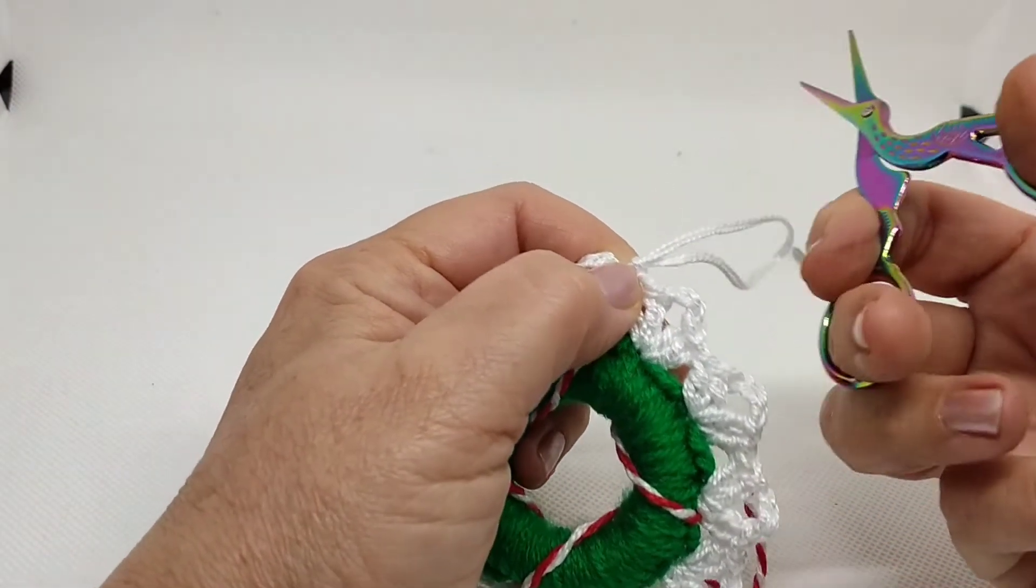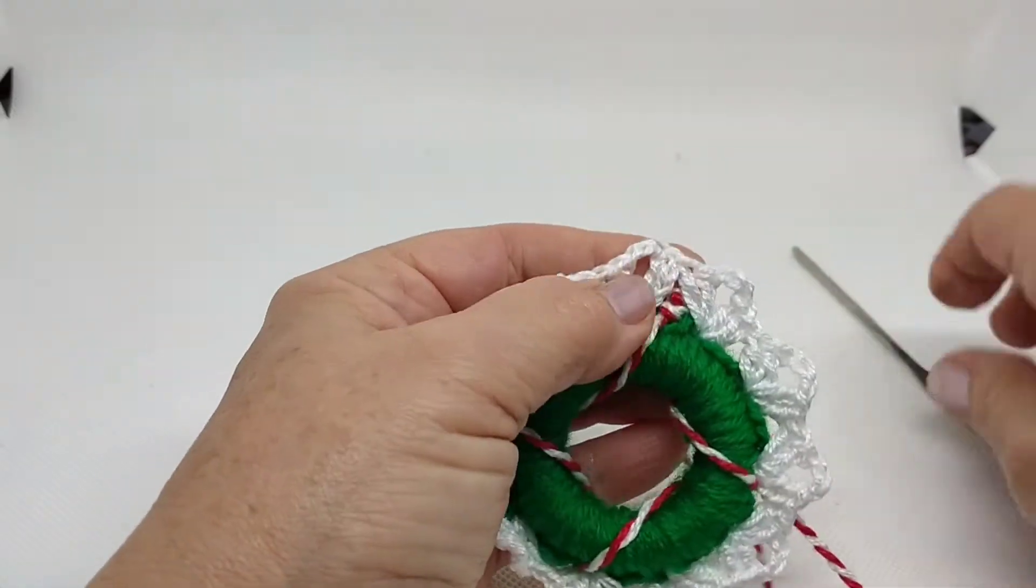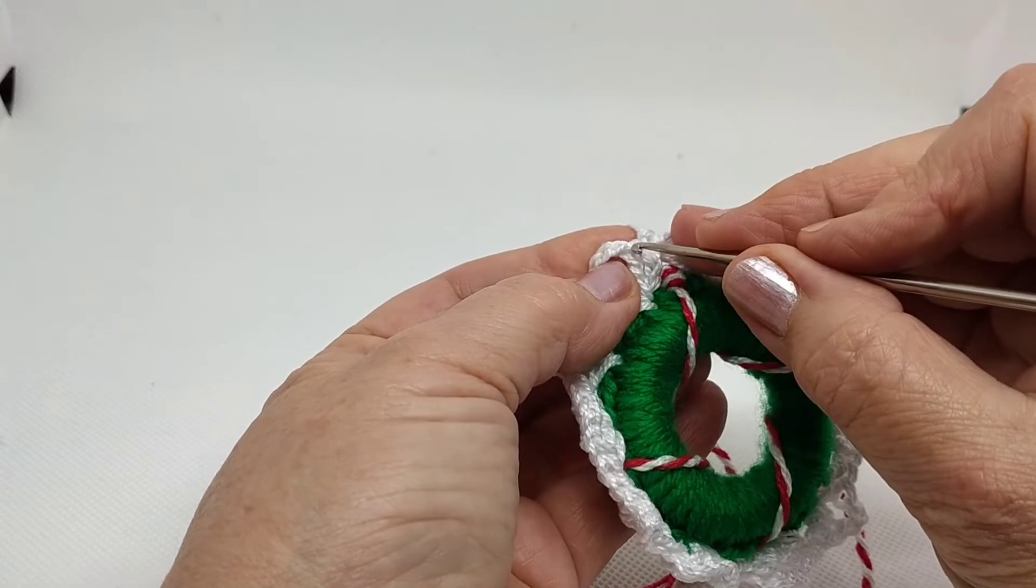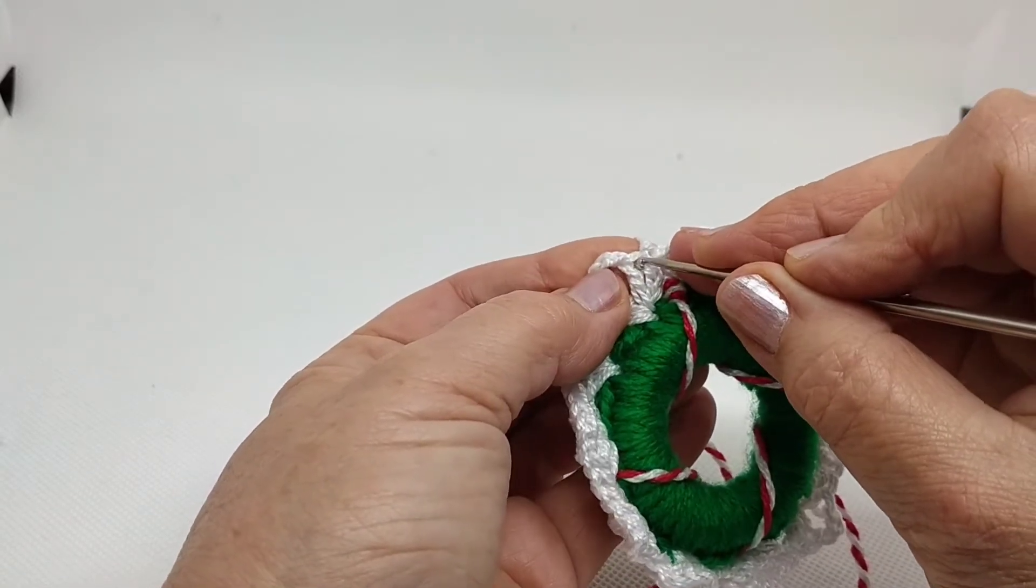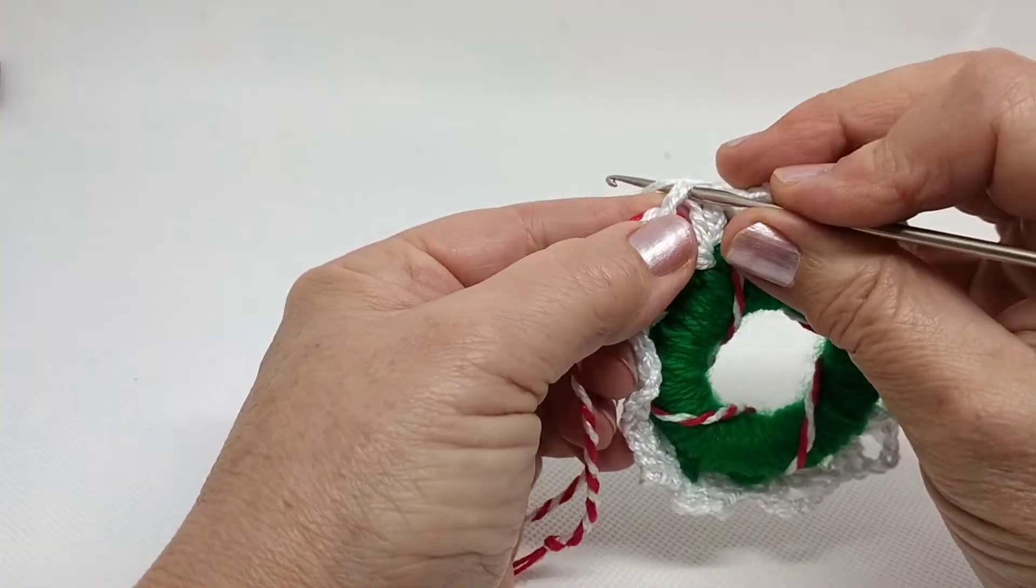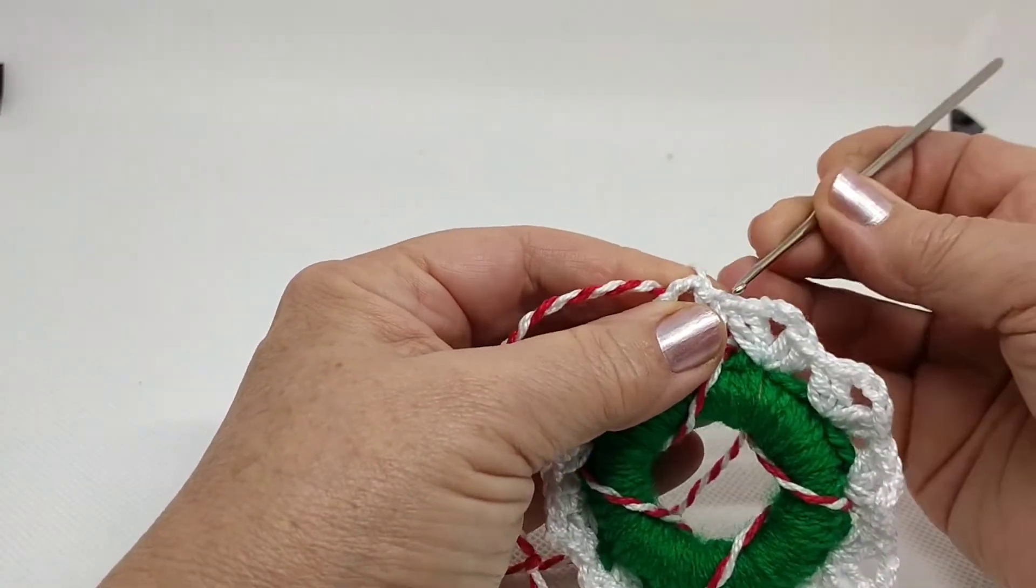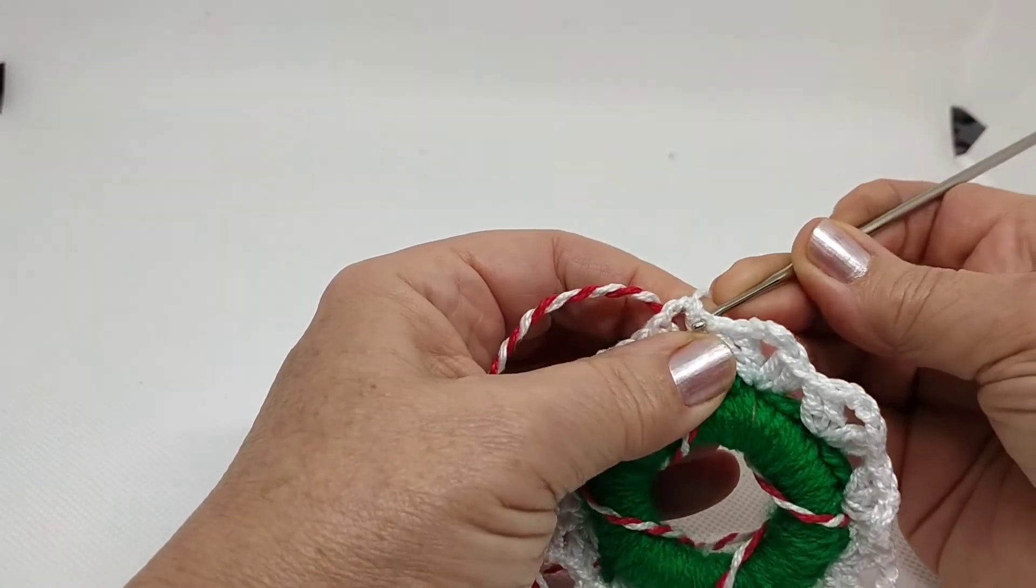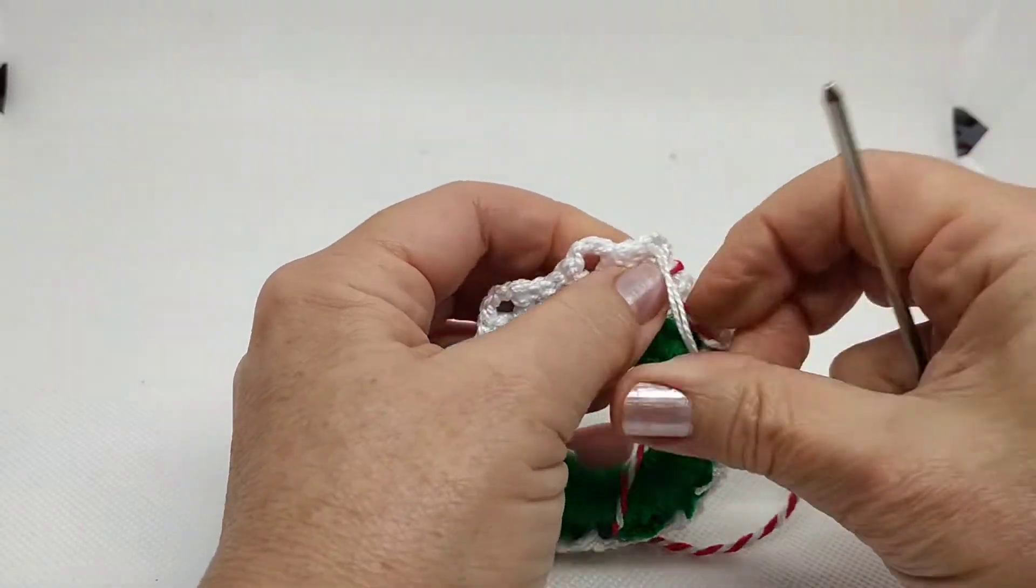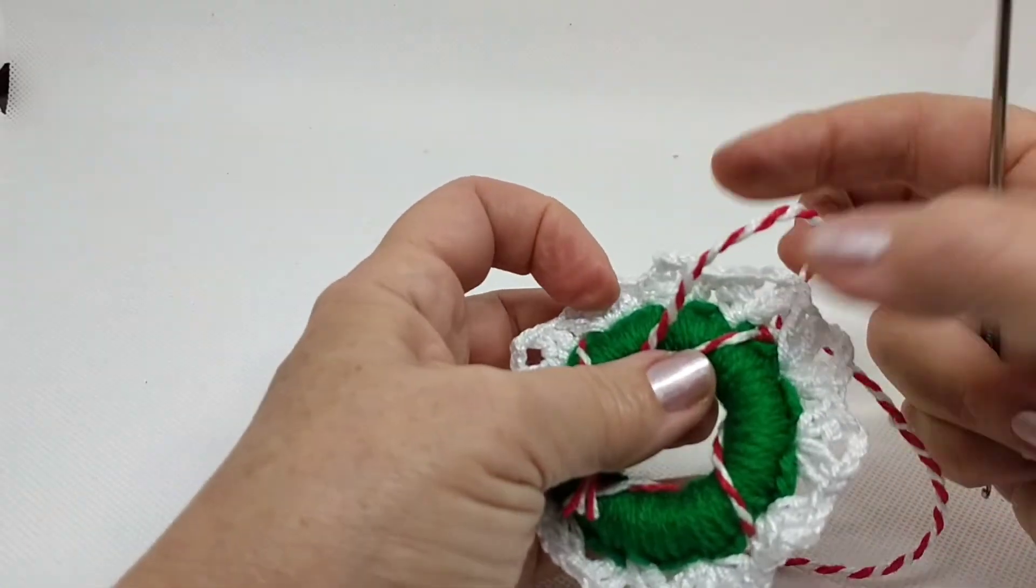Ya cortamos aquí también. Y este hilito lo vamos a esconder. Para afianzarlo un poco saltamos un punto, en el siguiente punto pincha y enganchamos el hilo. Lo traemos a este lado. Ahora desde atrás pinchamos en el anterior y lo llevamos hacia atrás. Ahora ya con la aguja lanera podemos acabar de esconder nuestra hebra.